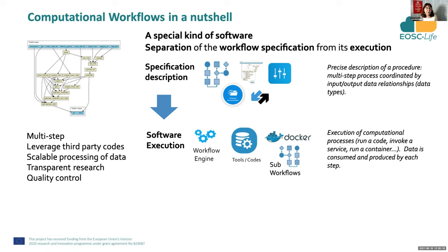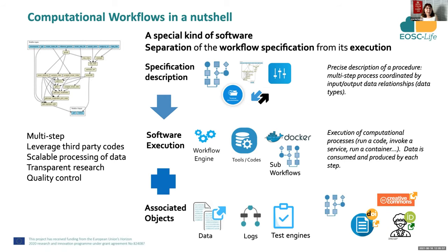They're a special kind of software. The key thing I wanted to highlight is a separation of the workflow specification from its execution. There are about 290 workflow systems, each with a workflow specification — a precise description including parameters, documentation, inputs and outputs — and then a software execution framework, the workflow engine, which will interpret the description and then run the tools, codes, containers, and sub-workflows. Associated with that are a whole bunch of other objects: data — test data, input data, output data — provenance logs, test engines, other workflows, papers, licensing, and the people who did it. So it's quite a complicated collection of entities that we're going to try to make FAIR.